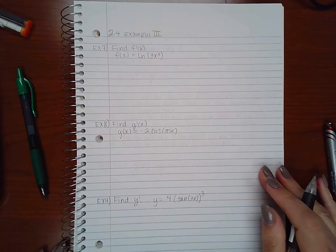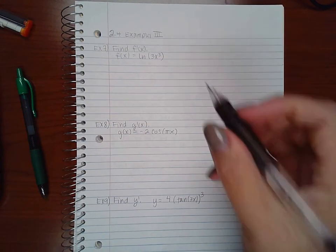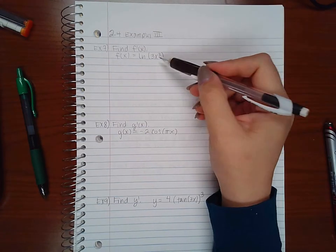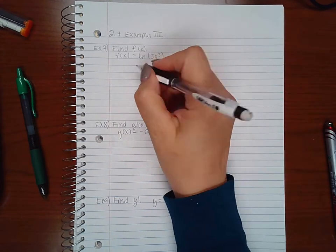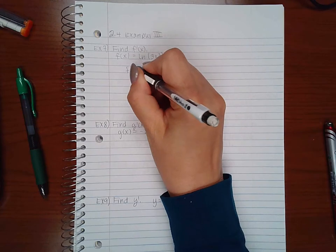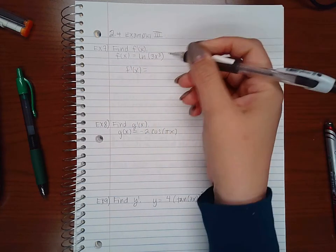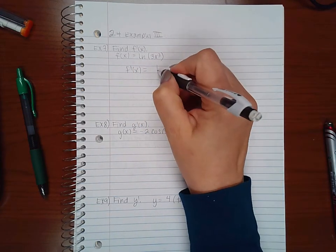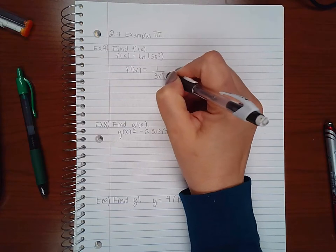Okay, more examples from the chain rule section. So now for example 7, I'm taking the derivative of a natural log. Now we know that the derivative of a natural log is just 1 over its argument, so 1 over 3x cubed.